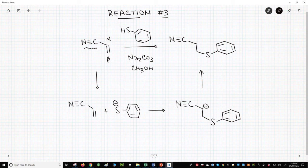This reaction occurs in base, and the base deprotonates the thiol to make a thiolate, a stronger nucleophile. The thiolate attacks the beta-carbon of the alpha-beta unsaturated nitrile.